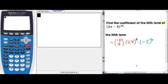For example, find the coefficient of the fifth term of (2x minus 5) to the 10th power. And we will figure out the fifth term will be this one, and how we put this form into the calculator.